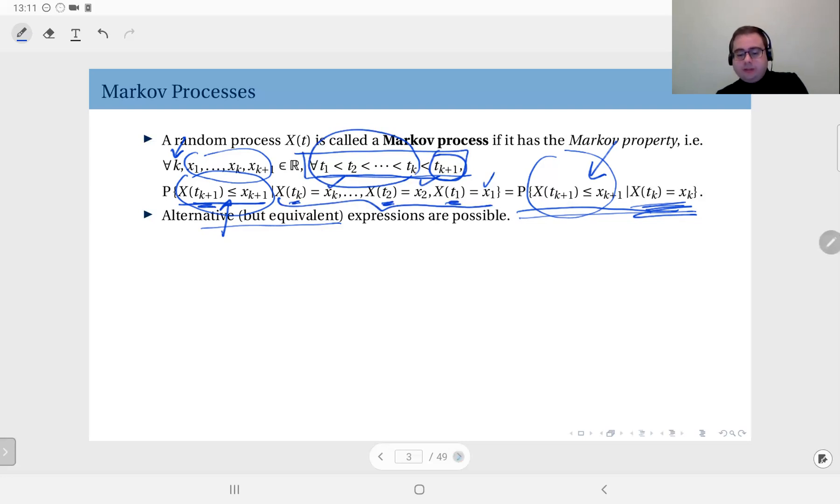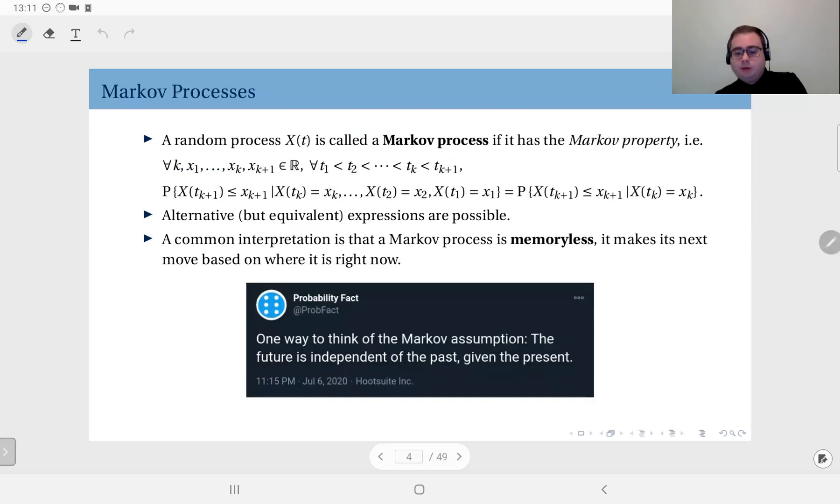In a sense we can say that the Markov process is memoryless. It makes its next move based on where it is right now. In other words, it forgets how it got to that certain point, and the path it will take from that point on does not depend on the history or the evolution of the process - it depends only on where it is. This is a common interpretation.